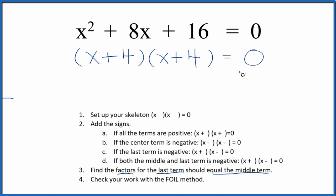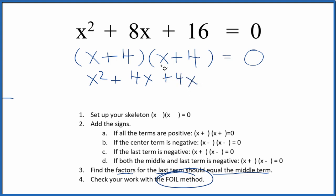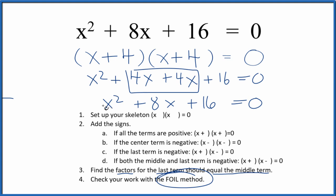We should have correctly factored the equation x squared plus 8x plus 16. Let's check our work with the FOIL method. First terms: x times x is x squared. Outside terms: x times 4 is 4x. Inside: 4 times x is 4x. And the last term: 4 times 4 equals 16. If we combine these terms, we get the same thing we started with, so we've correctly factored this equation.